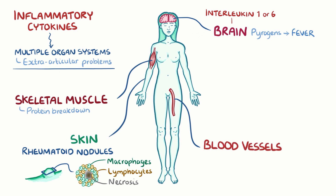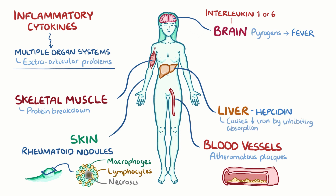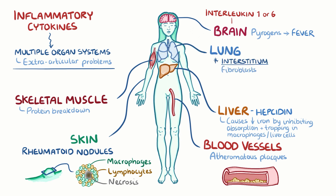Blood vessels can also be affected — their walls get inflamed, resulting in various forms of vasculitis, and make them prone to developing atheromatous, or fibro-fatty, plaques. In response to inflammatory cytokines, the liver also starts producing high amounts of hepcidin, a protein that decreases serum iron levels by inhibiting its absorption by the gut and trapping it into macrophages or liver cells. Within the lung interstitium, fibroblasts get activated and proliferate, causing fibrotic, or scar, tissue that makes it harder for alveolar gas exchange.